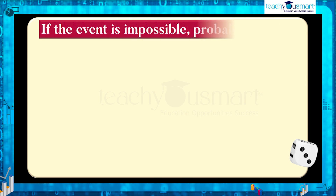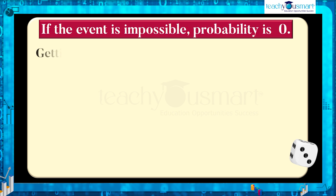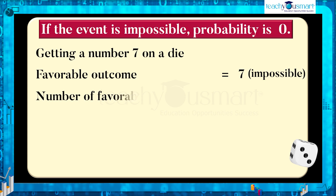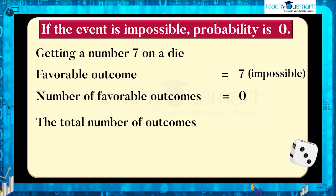If the event is impossible, the probability is zero. For example, getting a number seven on a die — the favorable outcome is number seven, which is impossible as the die has only the numbers from one to six. So the number of favorable outcomes equals zero, total number of outcomes equals six, therefore probability equals zero by six equals zero.